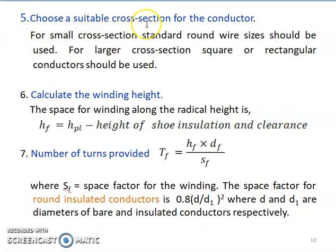For small cross-sectional area, winding can be done very easily using circular-shaped conductors. However, for high-rated machines with higher current through each conductor, circular-shaped conductors are not suitable; hence rectangular conductors are preferred. Next comes the calculation of winding height.